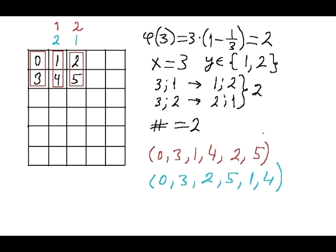The next case is x equals 3. We will write the arithmetic progression with the first two members 0 and 3 in the first column. We'll use the formula for calculating the value of Euler's function, which shows how many numbers are less than 3 and co-prime with 3. There are two such numbers: 1 and 2. So each of the two columns that start with these numbers can follow the first column. The total number of beautiful labelings for x equals 3 is 2, since there are two defining pairs (3,1) and (3,2), corresponding to pairs (1,2) and (2,1), each consisting of two co-prime numbers whose sum equals 3.